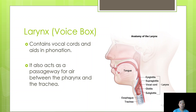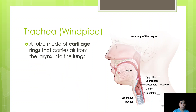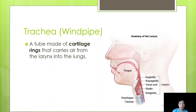The larynx is directly connected to the pharynx at the top and the trachea at the bottom. The trachea, also known as the windpipe, is a tube made of cartilage rings that carries air from the larynx to the lungs. These cartilaginous rings surround and protect the airway pathway.